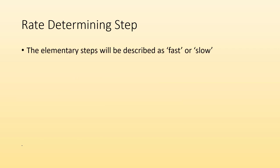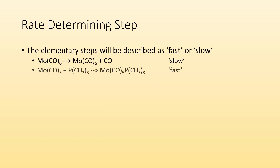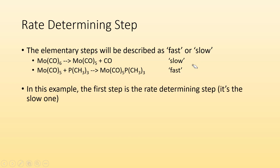The elementary steps will be described as either being fast or slow, and you'll see it like this: here's the overall reaction with the elementary steps below, and you can see that they say this one's slow and this one's fast. They'll have that kind of notation. In this example, the first step is the rate determining step because it's the slow one.